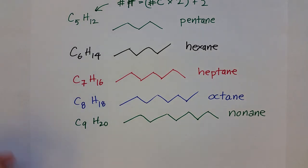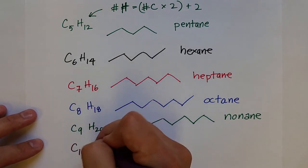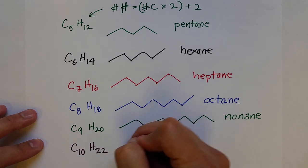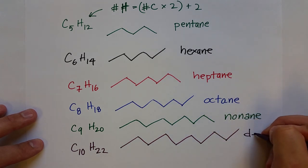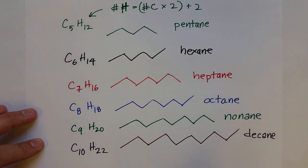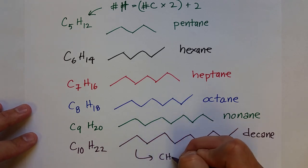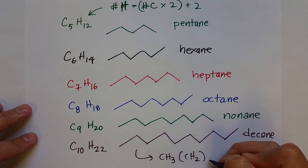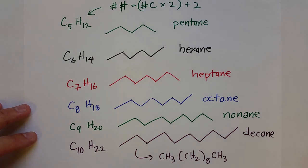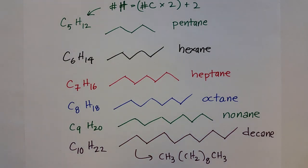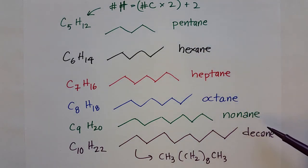And last will be decane with ten carbons: C10H22. One through ten — decane. If we wanted to, we could write the condensed formula for this: CH3, (CH2)8, CH3. So after methane, ethane, propane, and butane, we start to use prefixes that make more sense: pentane, hexane, heptane, octane, nonane, and decane.